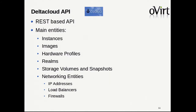The Delta Cloud API is also a REST-based API. Its main entities are instances, images, and hardware profiles. Realms are units that group data centers together — some kind of clusters; they don't have to be regional but may also serve as usage forums. There are also storage entities and network entities.